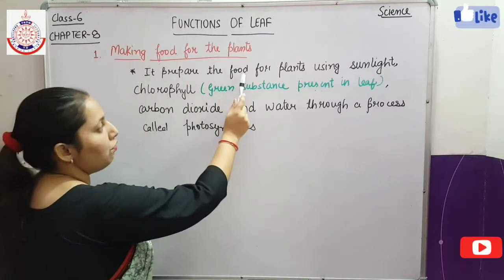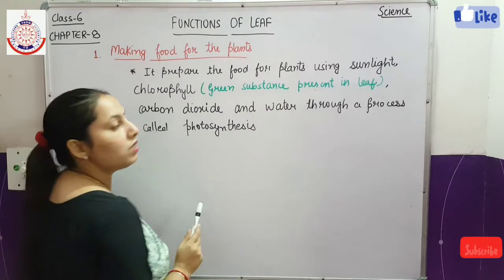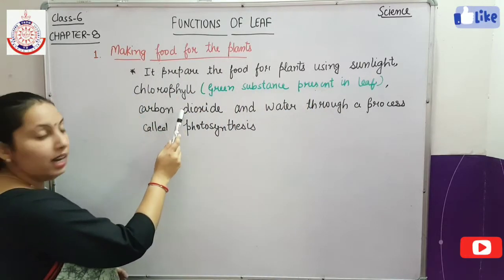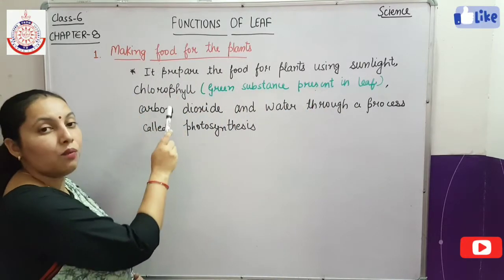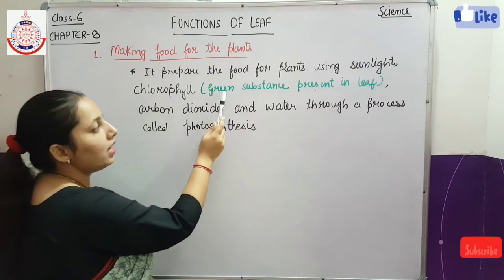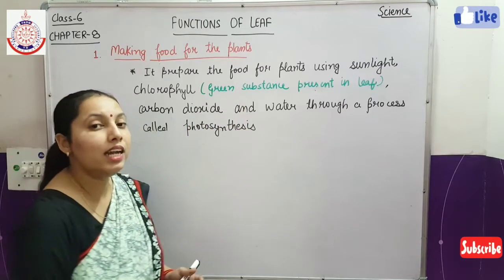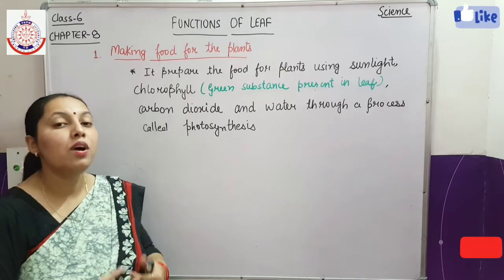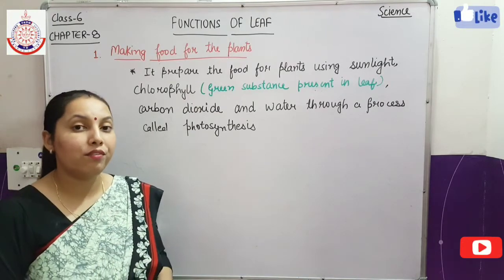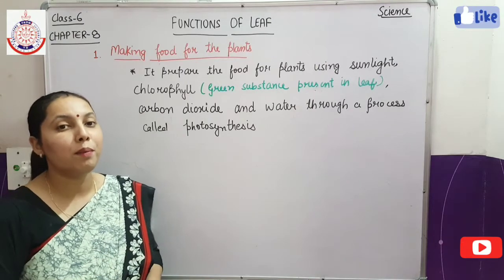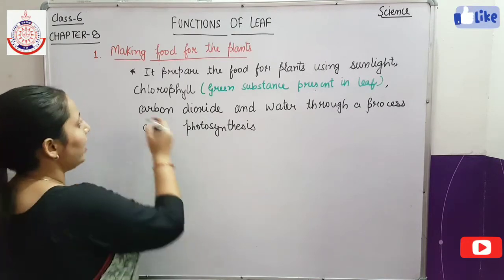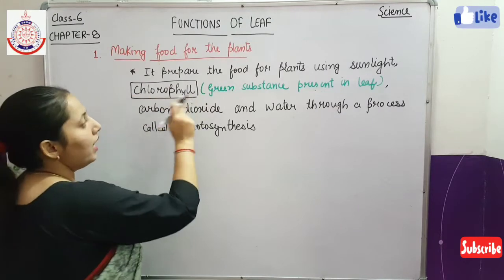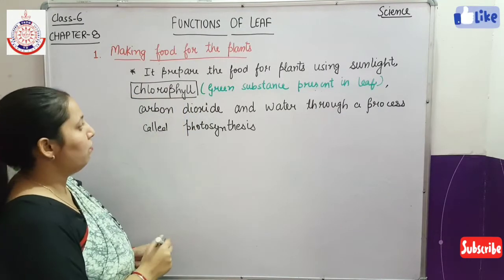The leaf prepares food for plants using sunlight and chlorophyll. What is chlorophyll? It is a green substance present in the leaf. If a question is asked to you — why is the color of the leaf green? — it is due to the presence of a substance called chlorophyll. It gives the color to the leaf.